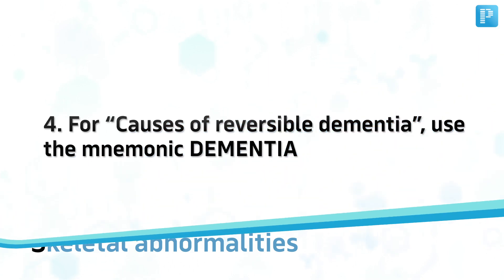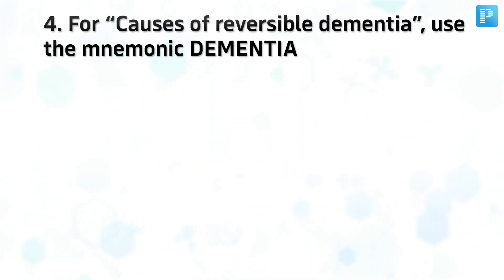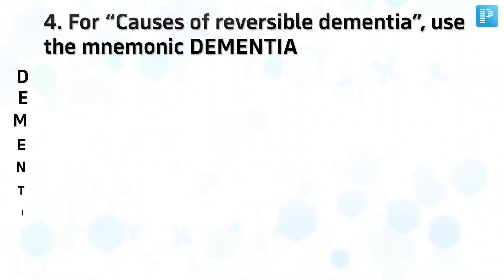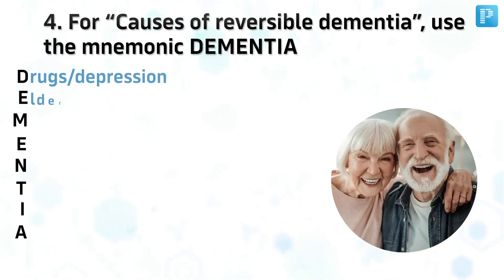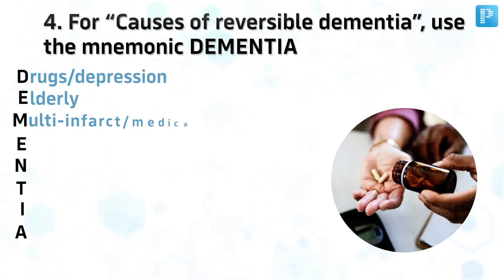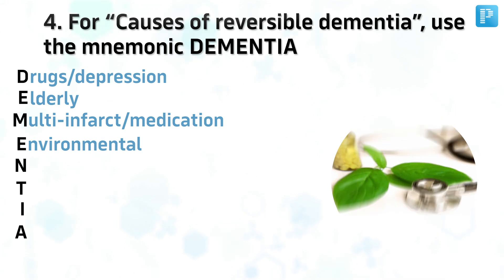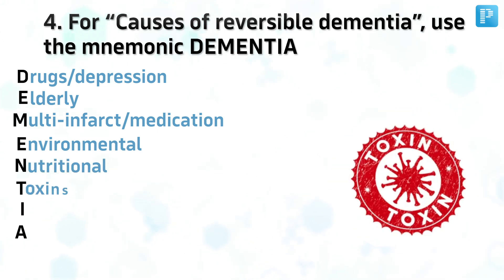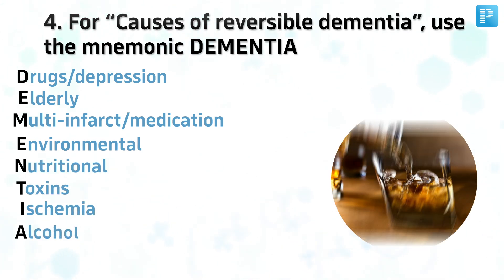Number 4. For causes of reversible dementia, use the mnemonic DEMENTIA: Drugs, Depression, Elderly, Multi-infarct medication, Environmental, Nutritional, Toxins, Ischemia, Alcohol.